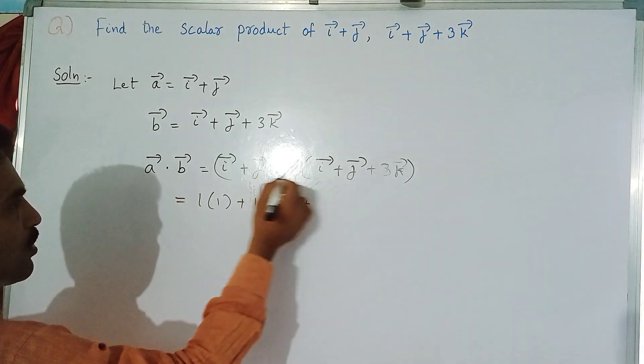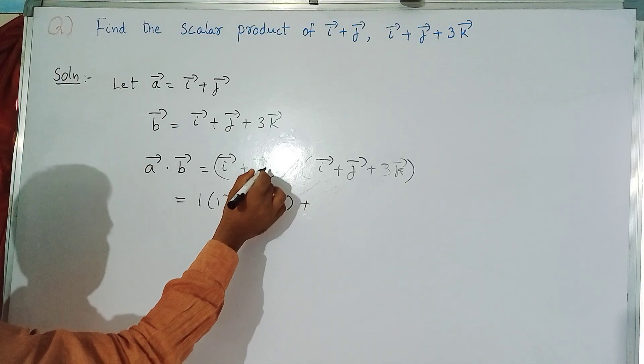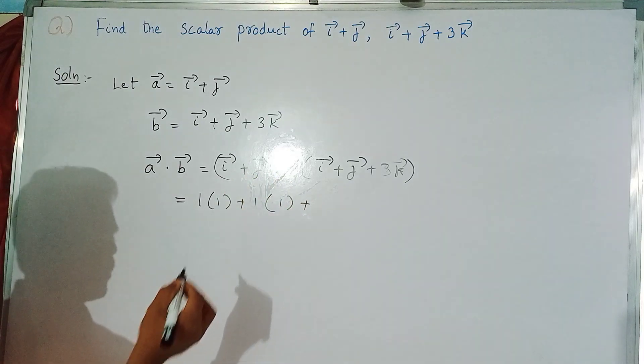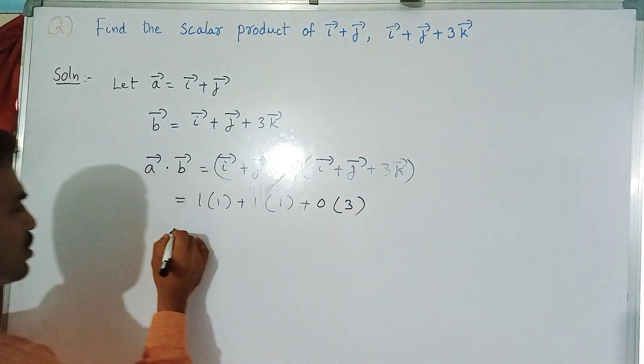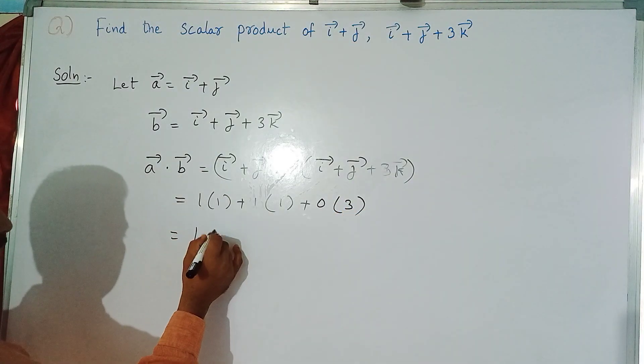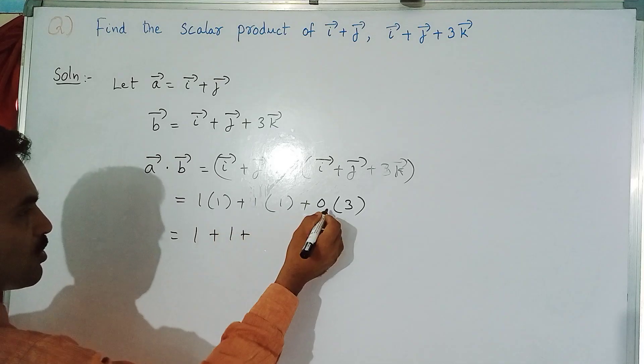In this a bar vector there is no k bar vector, so we have to take that as 0. Here k bar coefficient is 3. So this will be 1 times 1 plus 1 times 1 plus 0 times 3 is 0, so we'll get 2.